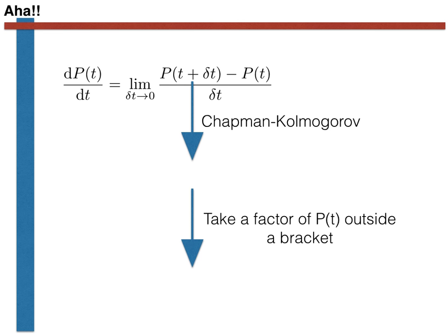We can then take a factor of P of T outside the bracket. Now if you look to the right of the limit sign we have a factor of P of T. This obviously does not depend on delta T and as such we can take it outside the limit.